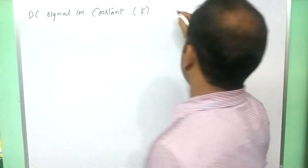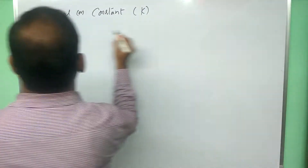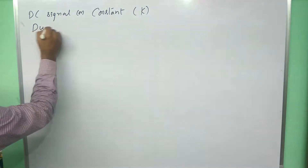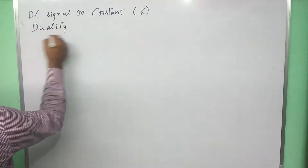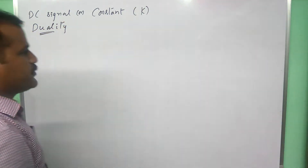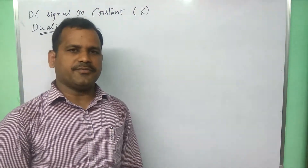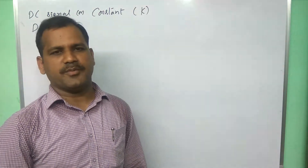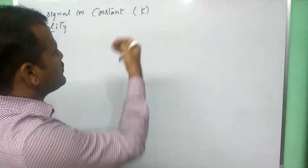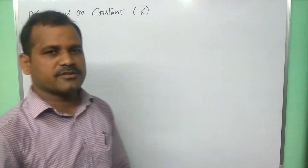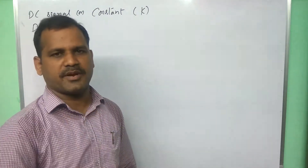I am writing the statement of duality property here. We have two analyses for Fourier transform: X of f and X of omega. Both statements I am writing here. Let us find the Fourier transform of this constant in both analyses, X of f and X of omega both.